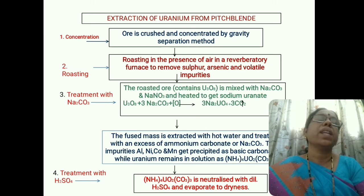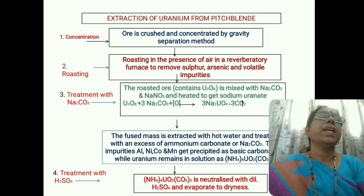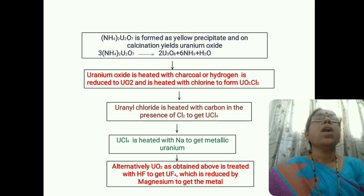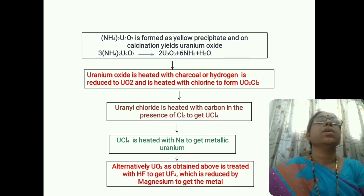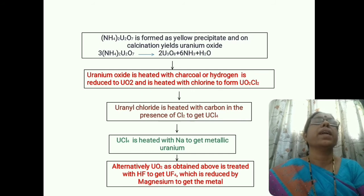Once ammonium uranyl carbonate is formed, it is neutralized with sulfuric acid and evaporated to dryness to get ammonium diuranate. This is formed as a yellow precipitate, and during calcination we obtain our required product, uranium oxide (U₃O₈).